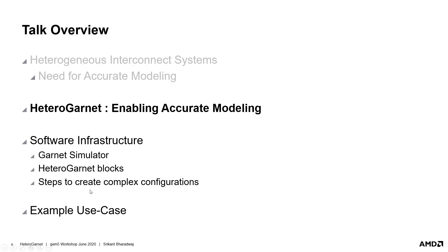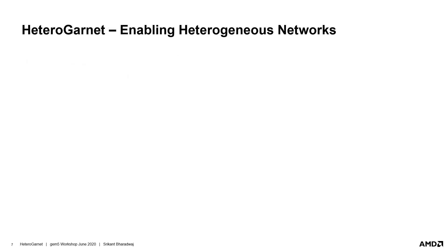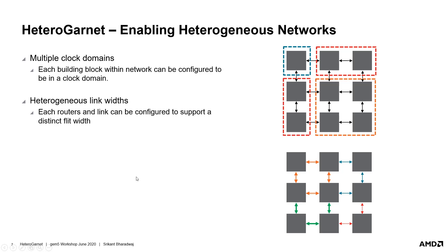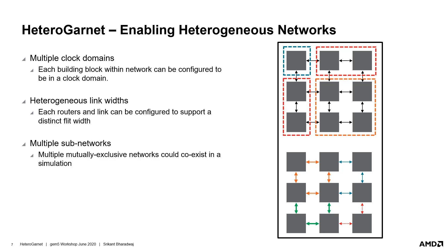We will then look at examples of creating complex interconnect configurations. One of the key features of Heterogarnet is support for multiple clock domains within the network. This allows easy and flexible configuration of systems where each part of the network could be configured to operate at a certain clock domain. Heterogarnet also adds a feature to support heterogeneous link and flit widths. Each router could be configured to route flits of a certain width, specified in bytes while creating the router, and this can similarly be done for each network link. Unlike Garnet, Heterogarnet allows creation of sub-networks which are mutually exclusive. This is helpful when creating chiplet configurations where the intra-chiplet network is not connected directly to the network in the interposer, or in CPU plus discrete GPU simulations requiring an exclusive GPU interconnect system.